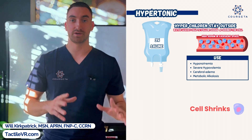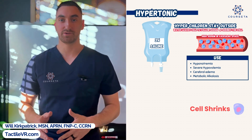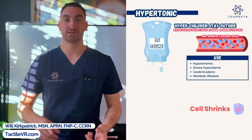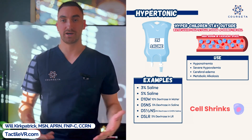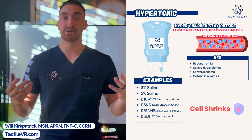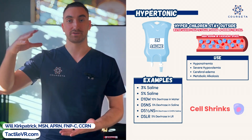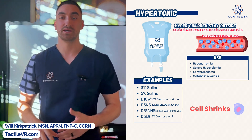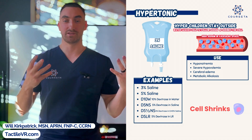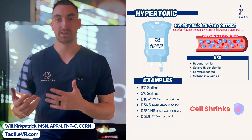Just as hypotonic fluids are low in sodium and have low numbers, the same logic applies to hypertonic fluids — they have high numbers. The most common is 3% saline. These are your common hypertonic fluids to remember. Hyper means high, so they're high in sodium, and those higher numbers refer to the concentration of sodium in that fluid. Hypotonic fluids are low because there's a low concentration of sodium.